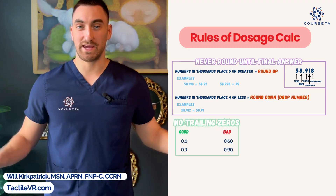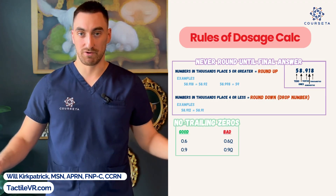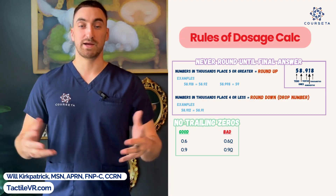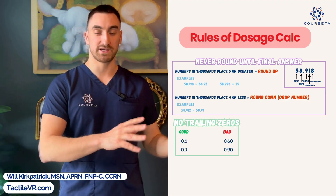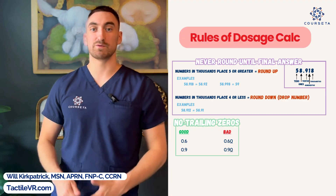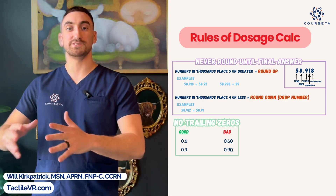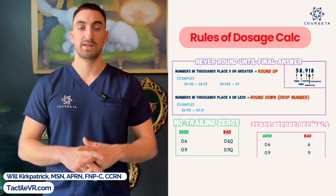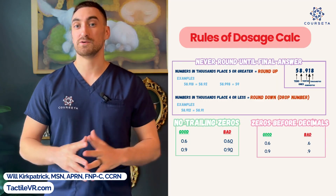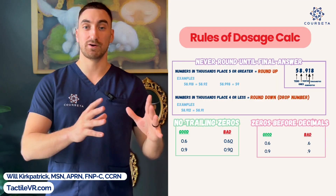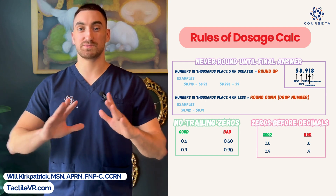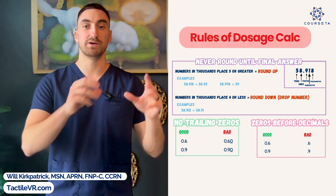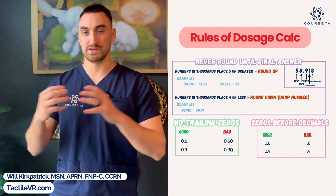You never have any trailing zeros in your answer. So for example, a good number would be 0.6 — a bad number would be 0.60. You never want to leave a trailing zero at the end. And lastly, you always want a zero before your decimal point. So don't write .6 — you want to write 0.6.